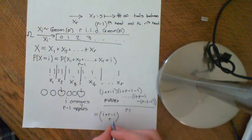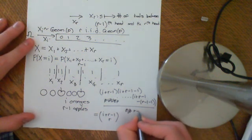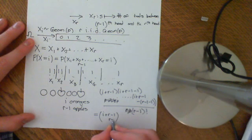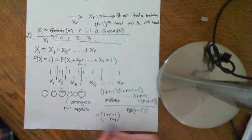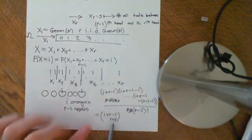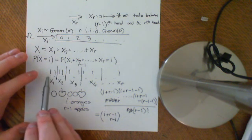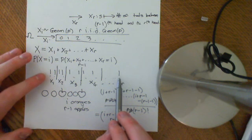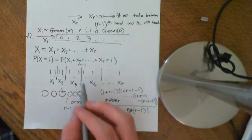There were r minus 1 apples, so we should have divided by r minus 1 factorial — and this would be r minus 1 there. So this represents the number of ways of splitting up the i ones amongst the r X's; it's the number of ways that you can make i from these X's.